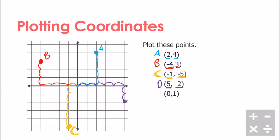Last but not least, let's look at point E. This one is interesting — it has zero as the x value, so instead of jumping left or right from the origin, I stay at the origin, and the y value of one means I go up one. So my point is right here, just one up from the origin — because we can have points that lie on the axis. Now that we know more about the Cartesian plane, we can apply it to problems we'll look at in this unit.